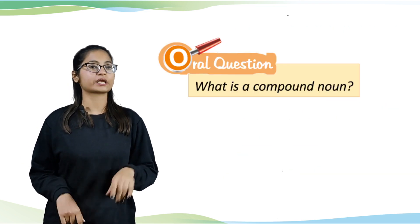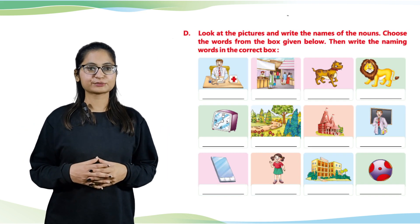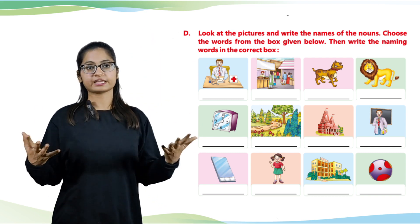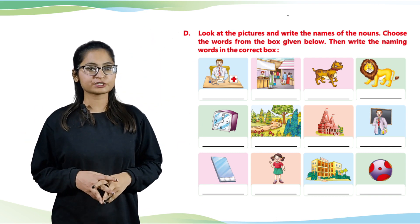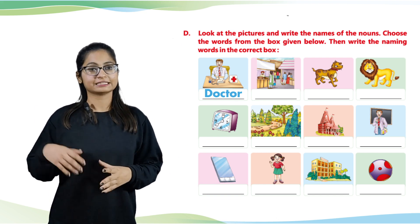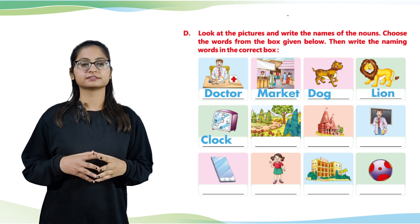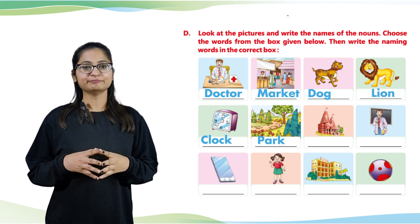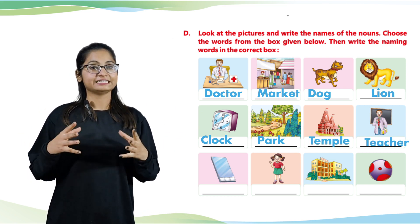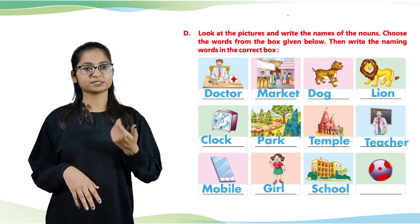Now let me ask you one oral question: what is a compound noun? Okay students, let's move to part D. We have been given many pictures and we have to write the names. The pictures show: a doctor, a market, a dog, a lion, a clock, a park, a temple, a teacher, a mobile, a girl, a school, and a ball.